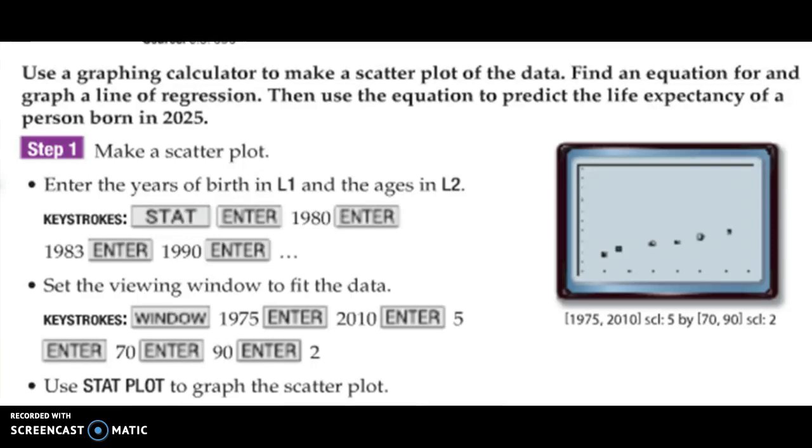Then, we go over, hit over. L2 is going to be their life expectancy. So, 73.7, enter. 74.6, enter. 75.4, enter. 75.8, enter. 76.8, enter. 77.7, enter. So you should have the same number in the L1 column as you do in the L2 column.